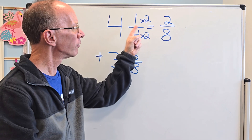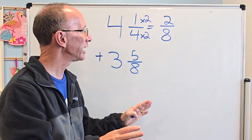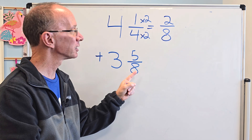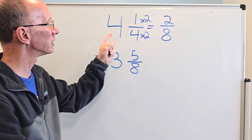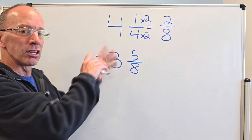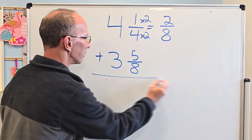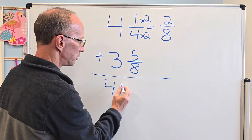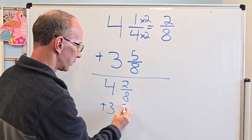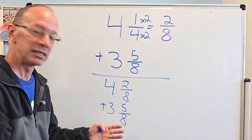Now, 1 fourth equals 2 eighths. The value of that does not change at all. Now, I'm going to keep this one just 5 eighths. So now my problem is 4 and 2 eighths plus 3 and 5 eighths. If you get a little messed up, you can always rewrite it. So I'm going to go ahead and just rewrite this so you can see — I have 4 and 2 eighths plus 3 and 5 eighths.